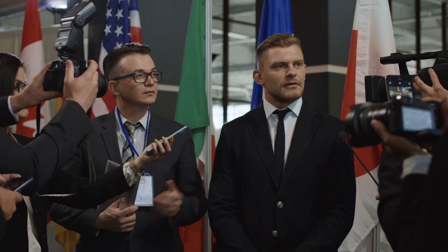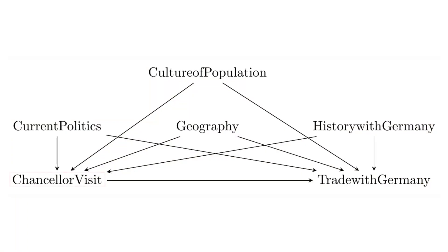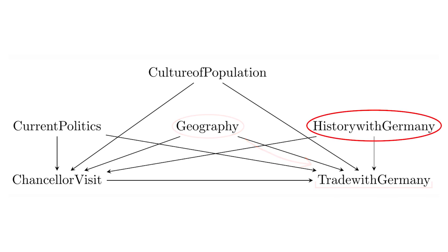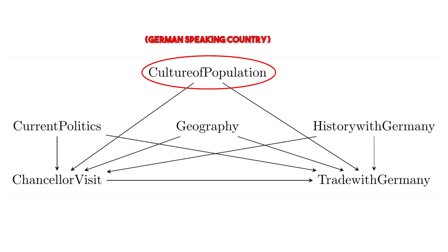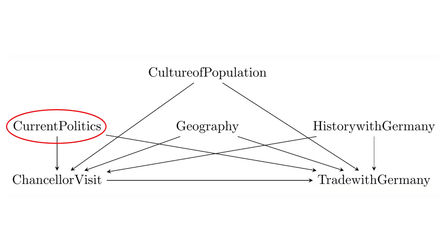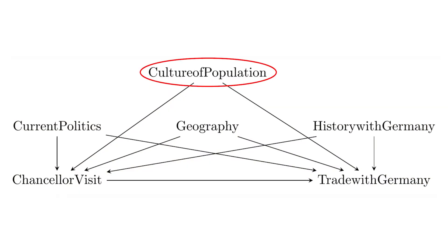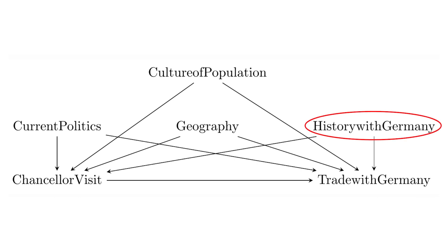Let's say I'm interested in whether a recent visit from the Chancellor of Germany to your country makes your country do more trade with Germany. There are many variables on the causal diagram: the geography of your country — if you're closer to Germany you trade more; your history with Germany — a strong prior trading history affects both whether the Chancellor visits and future trade; the culture of the population — a German-speaking country may trade more; and current politics — is your country on good terms with Germany?